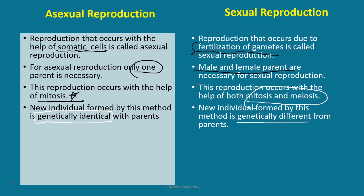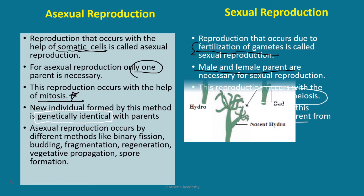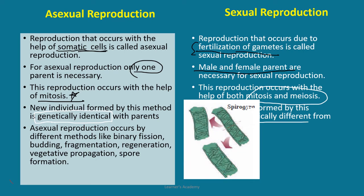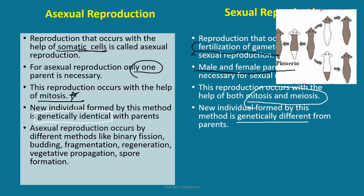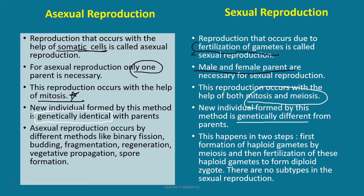In case of asexual reproduction, it occurs by different methods like binary fission, budding as in hydra, fragmentation as in spirogyra, regeneration, vegetative propagation, and spore formation — so there are many ways. Whereas sexual reproduction happens in two steps: first is the formation of haploid gametes by meiosis, and then fertilization of these two haploid gametes to form a diploid zygote. There are no subtypes in sexual reproduction. In the next slide I'm going to give you even more points you can add to this.